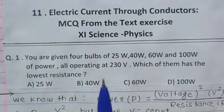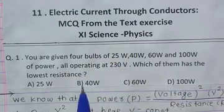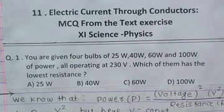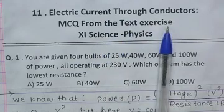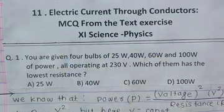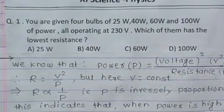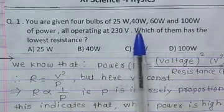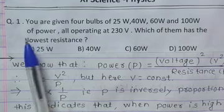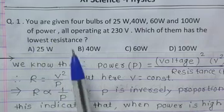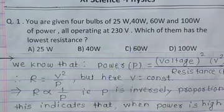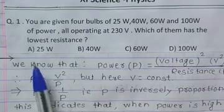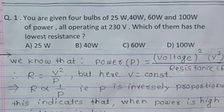Namaskar Vidyarthi mitra. Akravi science physics chapter 11, electric current through conductors. We'll be solving textbook exercise MCQ questions. Question number one: You are given four bulbs of 25 watt, 40 watt, 60 watt and 100 watt, all operating at 230 volt. Which of them has the lowest resistance?